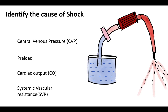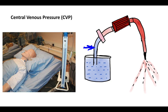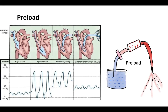The hemodynamic parameters we look at are central venous pressure (CVP), preload, cardiac output, and systemic vascular resistance. CVP is measured in the superior vena cava using a catheter and gives us an idea of the amount of blood in the venous pool. A manometer helps identify the central venous pressure.